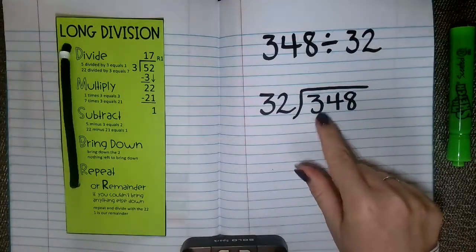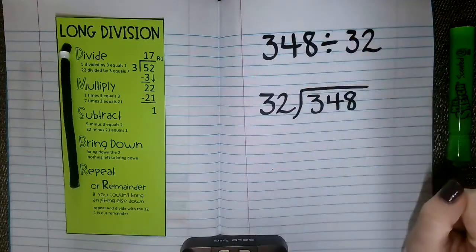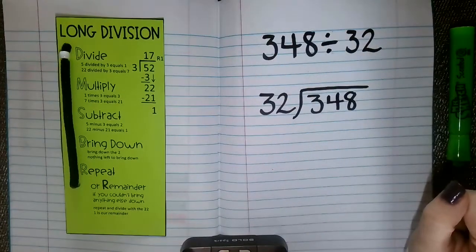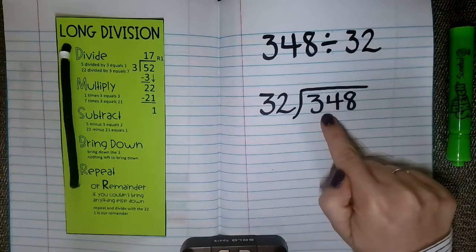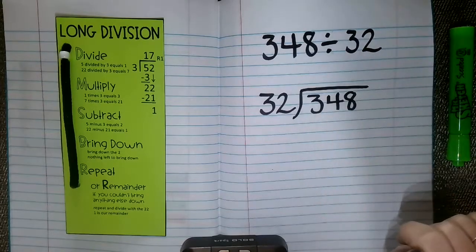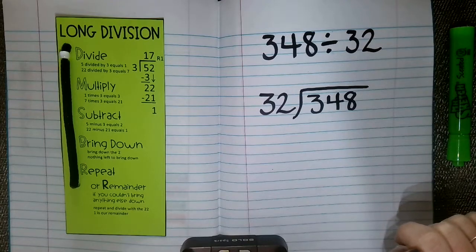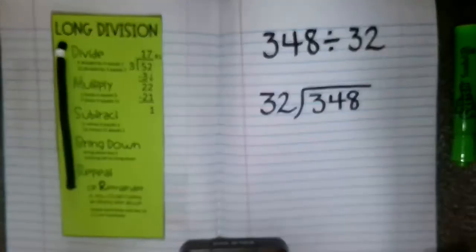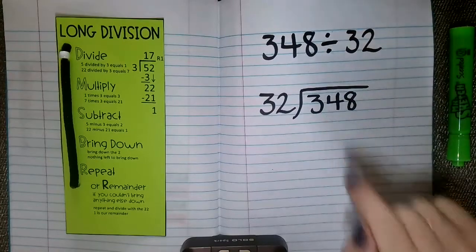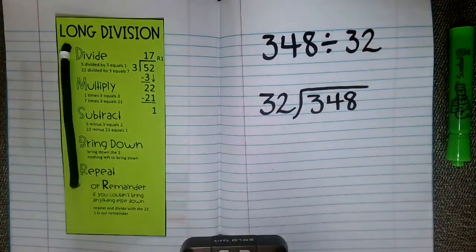So we always want to make sure that when we're dividing by whole numbers, with whole numbers, we want to make sure that our dividend is the larger number. So hopefully your paper looks like mine now, and we are going to start with what is 348 divided by 32.